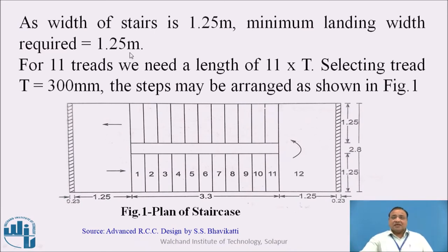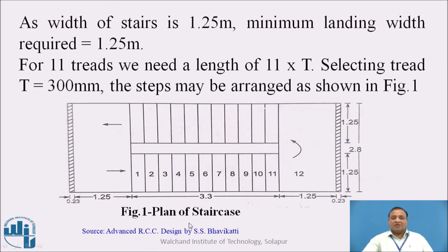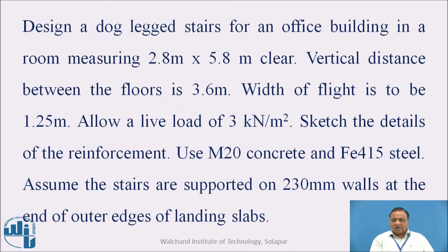As the stair is 1.25 meter width, the minimum width of the landing required is also 1.25 meter. For 11 treads, we need a going length of 11 into T. Selecting the tread T as 300 mm, the going length is 3.3 meter. The step arrangement is shown in the plan in figure number 1, with 11 treads and landings on each side, giving a total room size of 2.8 by 5.8 meter.